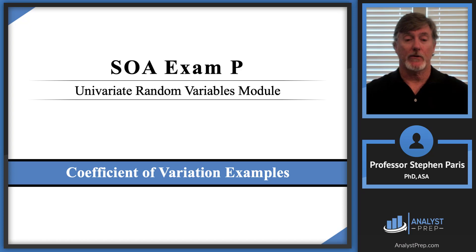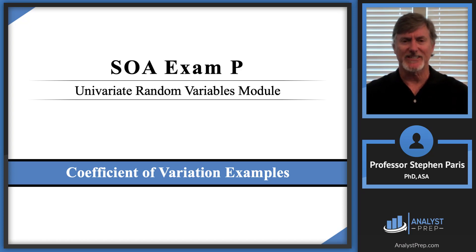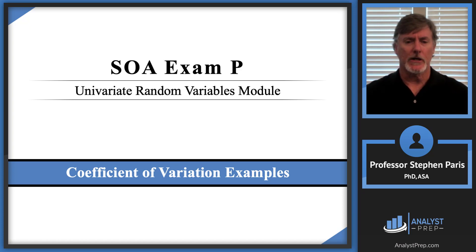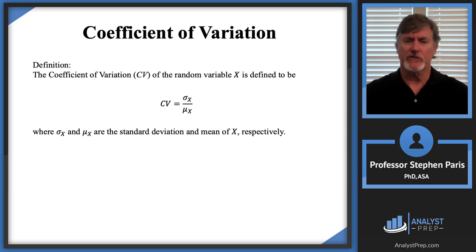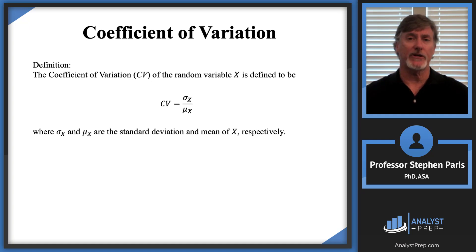In this video we're going to talk about what's called coefficient of variation. This is a topic that's explicitly stated in the syllabus for exam P that you're supposed to know. The coefficient of variation of a random variable is defined to be the ratio of the standard deviation of the random variable to the mean of the random variable.